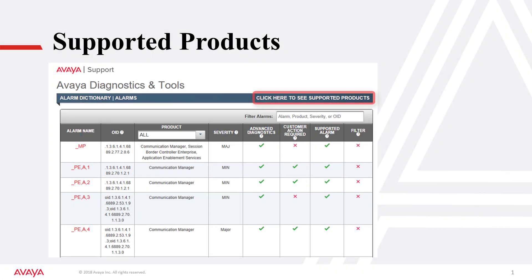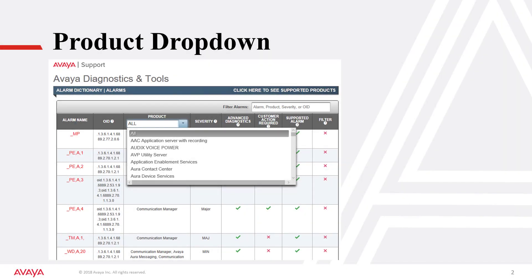Another option is presented to view the supported products. Use the filter alarm search box to enter the alarm string, product type, alarm severity, or object identifier. The product dropdown provides a list of alarms for all products, or the ability to focus on a specific product.